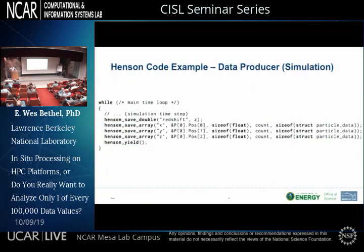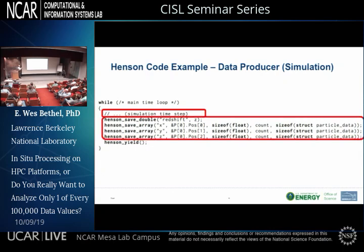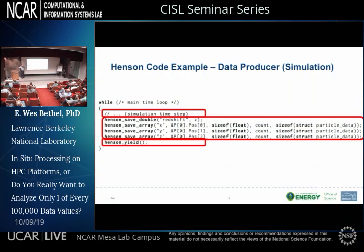Here's a simulation code example. Inside this red box is the simulation time step — all the beauty of scientific simulation. After that, you're saving an array: it's particle-based data, saving the X, Y, and Z positions of particles — a non-interleaved array. This simulation is a PIC-based code and we're saving particle positions. Then inside the simulation, we say 'yield.' Mapping this onto the design pattern: open, write data phase, close — with some extra stuff.